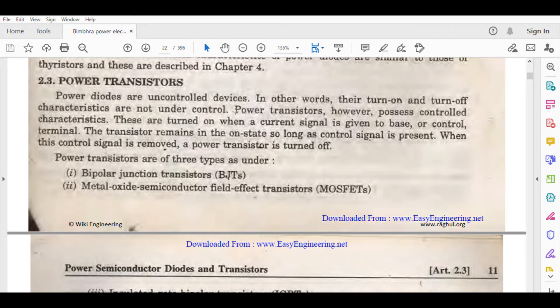In other words, their turn-on and turn-off characteristics are not under control. Power transistors, however, possess controlled characteristics. These turn on when a current signal is given to base or control terminal. The transistor remains in the on-state so long as control signal is present. When this control signal is removed, a power transistor is turned off.